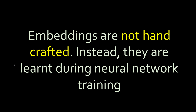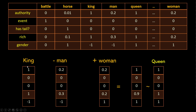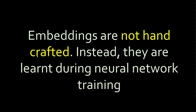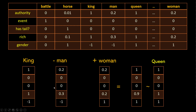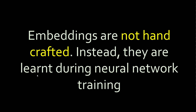So you don't want to hand-craft it. In computer programming, you can use neural networks to learn these feature vectors. Authority, event, has tail — these are called features in the language of machine learning. Using neural networks you can learn these feature vectors without hand-coding them. One interesting thing that will happen is you will not know what these feature vectors represent — you won't know that this one means authority — but it will all work magically.